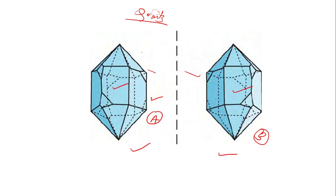With this we have covered the very important categories under crystal forms. In the next lecture we will look at more common forms such as prisms, pinacoids, pedions, and others. If you have any doubts, feel free to ask in the comment section. Thank you.